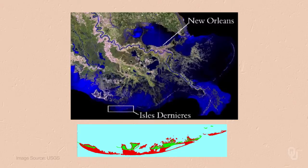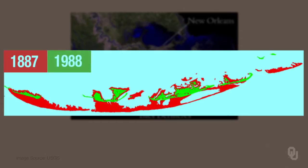Here's some pictures of Louisiana. There's New Orleans. We're going to be down here to the southwest of New Orleans. In the lower picture are these islands. The red shows what they were like in 1887, and the green shows what they were like in 1988. Notice the difference: one, they moved landward, and two, there's been significant land loss.